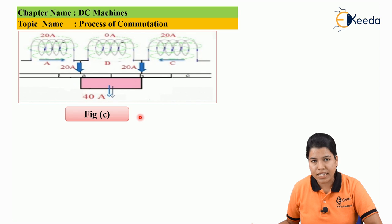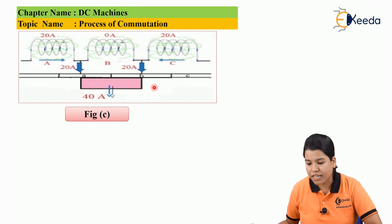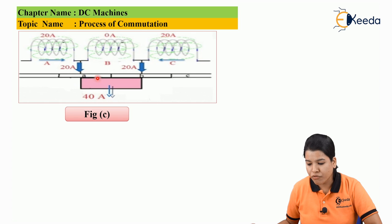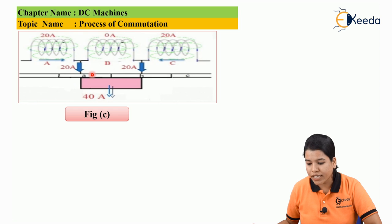In figure C, coil B is fully short-circuited by the brush, so the current through coil B is 0A. Half of the brush is along segment A and half along segment B. The current flowing from coil A via segment A is 20A, and the current flowing from coil C via segment B is 20A. Hence, the total current across the brush is 40A.